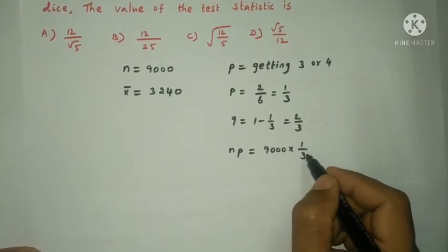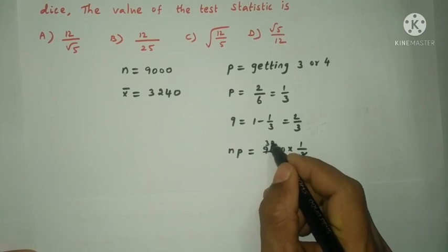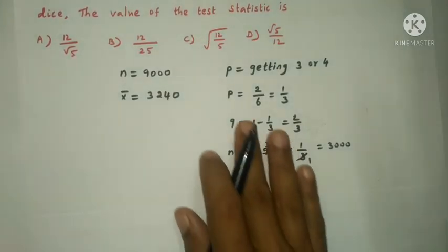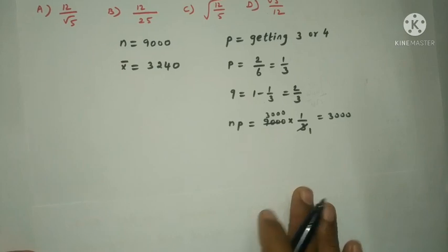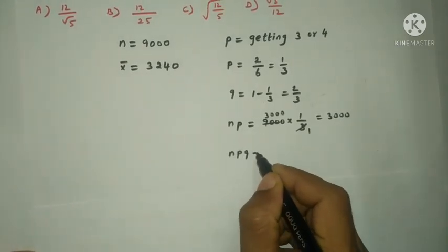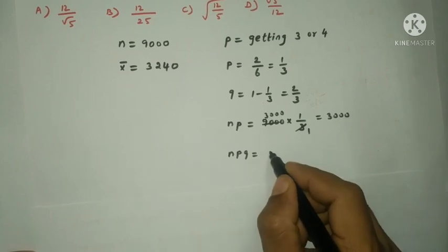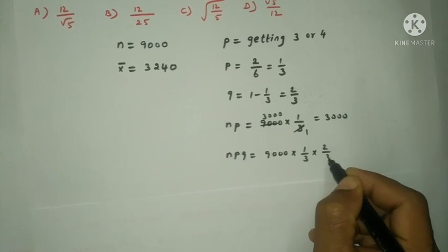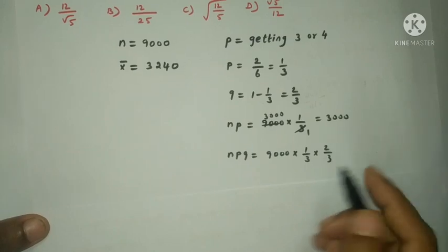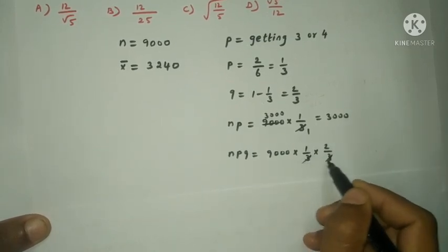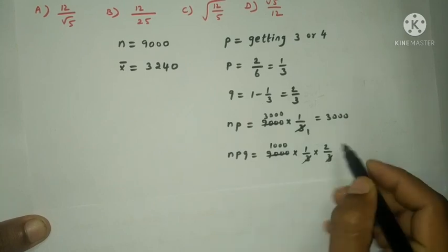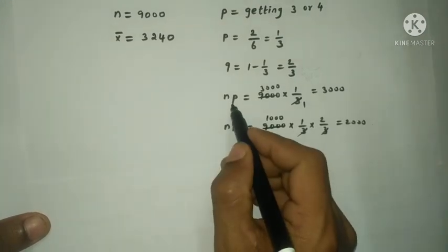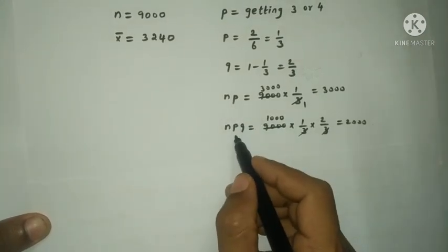NP equal to 9000 into 1 by 3, therefore the NP is 3000. NPQ is 9000 into 1 by 3 into 2 by 3, which equals 2000.